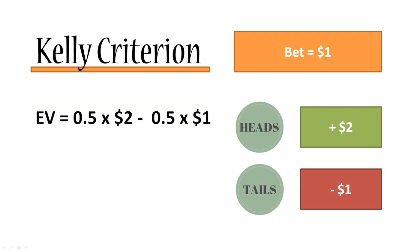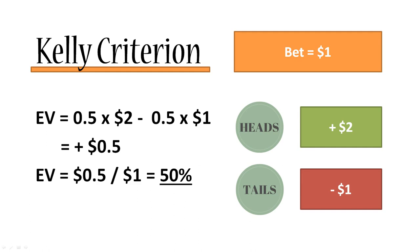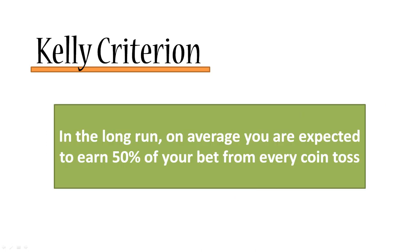The expected value is calculated as the odds of getting heads — that's 50% — times the return on getting heads, which is two dollars, minus the odds of getting tails, which is 50%, times the loss on getting tails, which is one dollar. So the expected value in this case is 50 cents, and in percentage terms it's 50% of your original investment. What that means is that in the long run, if you average out all of the coin tosses, you're expected to earn 50% of your bet on every coin toss.